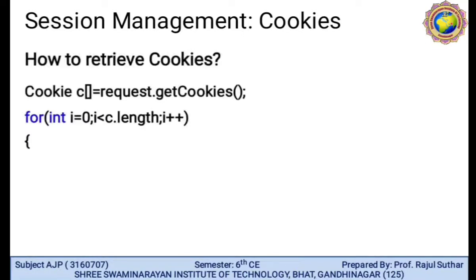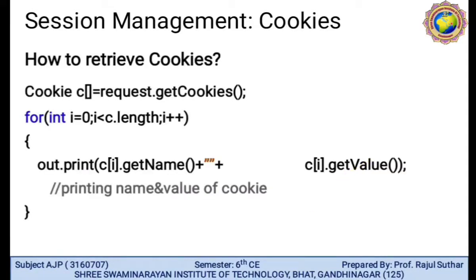How to retrieve a cookie: Cookie[] c = request.getCookies(). We require a for loop — int i = 0; i less than c.length because the cookie array has some length; then i++. We use out.print(c[i].getName()) to retrieve and print the name, and c[i].getValue() to print the value of the cookie.